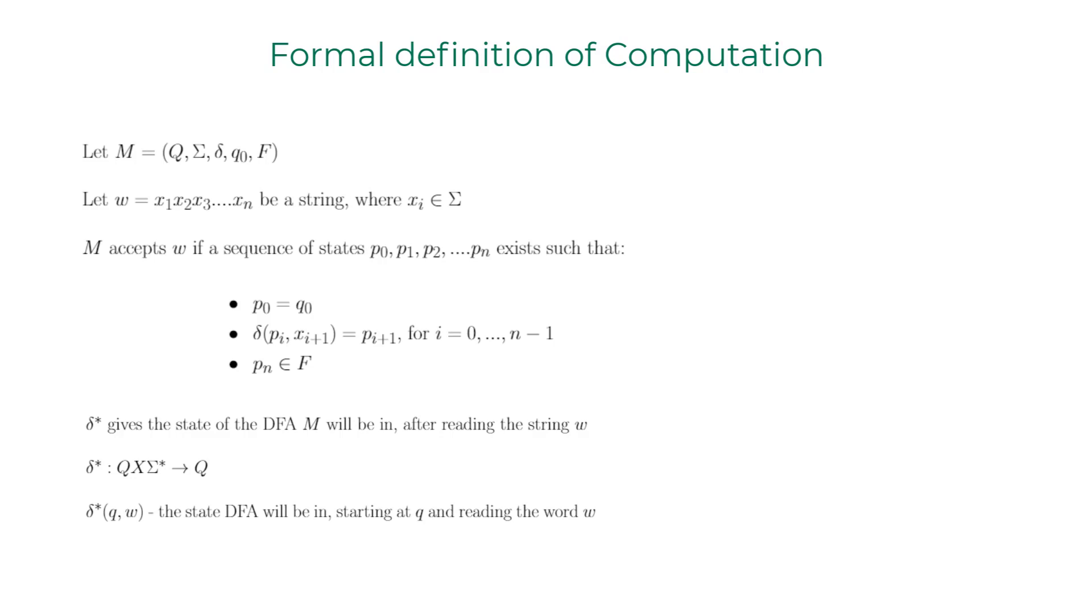So the string W can be any string from sigma star. So delta star of Q comma W will be the state DFA M will be in starting at Q and after reading the word W. If the definition of delta star is still unclear, let me explain that using this DFA example. Delta star of Q0 comma 1001100 is going to end up at Q1. We just saw that. We'll discuss delta star more formally in the next lecture, but for now, I hope you got the intuition of what delta star is about.